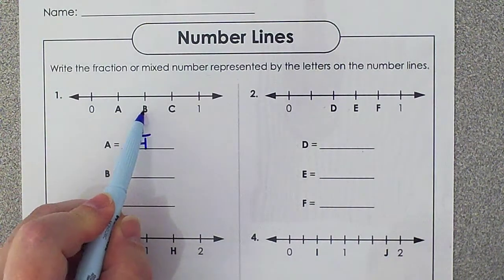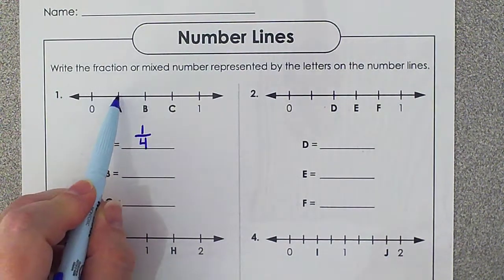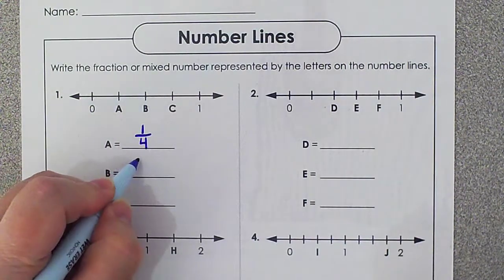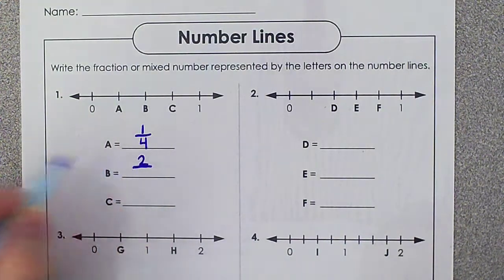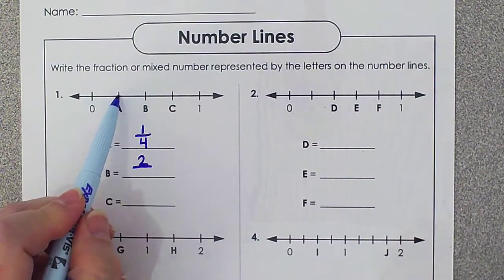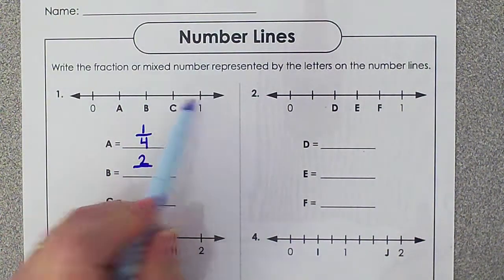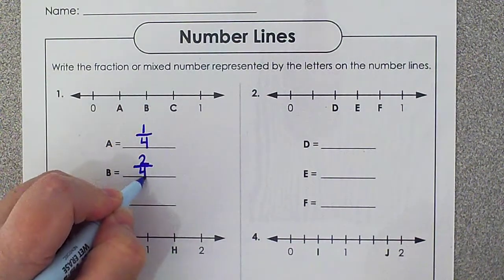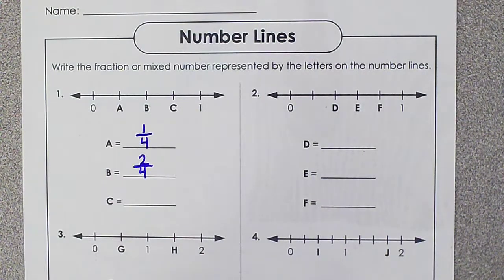B. B is located at 1, 2, 2 marks over out of 1, 2, 3, 4. So B is located at 2/4.